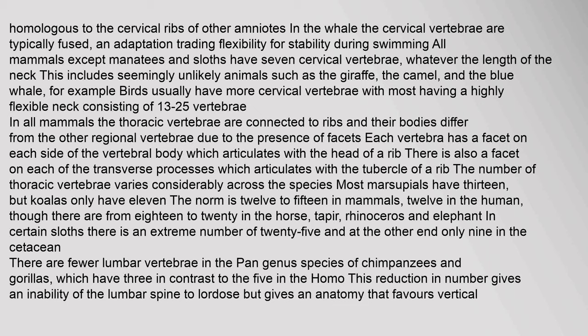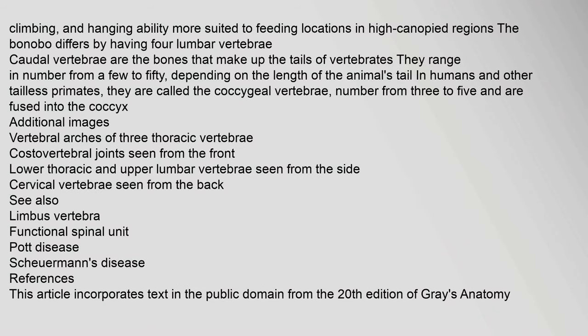In all mammals, the thoracic vertebrae are connected to ribs and their bodies differ from other regional vertebrae due to the presence of facets. Each vertebra has a facet on each side of the vertebral body which articulates with the head of a rib, and a facet on each transverse process which articulates with the tubercle of a rib. The number of thoracic vertebrae varies considerably across species: most marsupials have 13, but koalas only have 11. The norm is 12–15 in mammals, 12 in humans, though there are 18–20 in the horse, tapir, rhinoceros, and elephant. In certain sloths there is an extreme number of 25, and at the other end only 9. In chimpanzees and gorillas there are 3 lumbar vertebrae, in contrast to 5 in humans. This reduction gives an inability of the lumbar spine to lordose but favors vertical climbing and hanging ability. The bonobo differs by having four lumbar vertebrae.